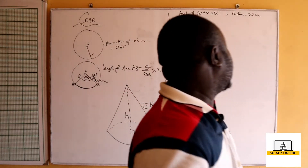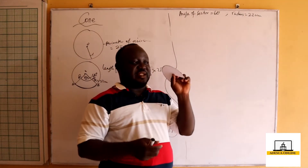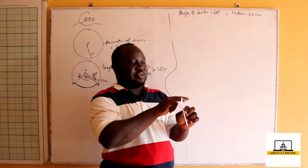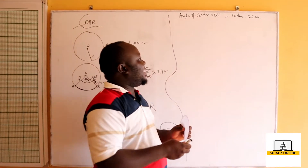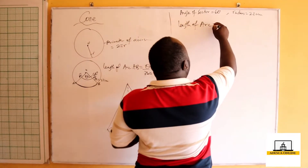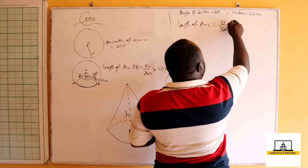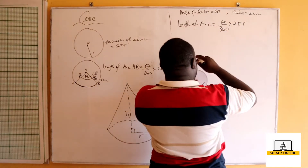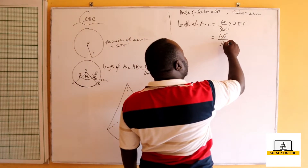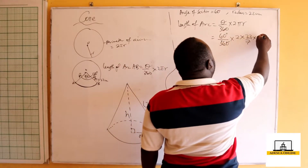We have a sector where the angle is 60 degrees. We need to find the length of the arc. The length of arc equals theta over 360 times 2πr. So we have 60 degrees over 360 degrees times 2 times 22 over 7 times the radius r.